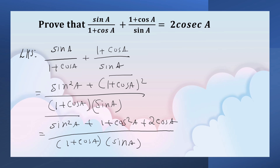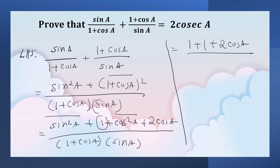Here, you can observe that sin square A plus cos square A is equal to 1. So, 1 plus 1, this one, plus 2 cos A upon 1 plus cos A into sin A.